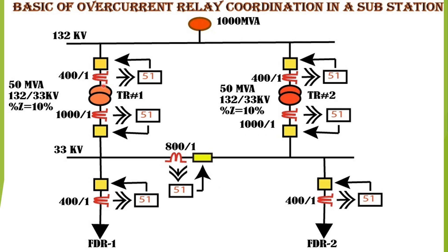The CT positions are shown from the HV side to the LV side of the transformer, and for the bus coupler CT and feeder CTs. The CT ratio for the HV side of the transformer is 400 by 1, for the LV side it is 1000 by 1, for the bus coupler it is 800 by 1, and for each feeder it is 400 by 1. Overcurrent relays are connected from the CT secondary side of the feeder, bus coupler CT, LV side CT, and HV side CT.